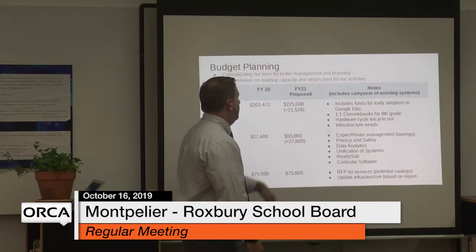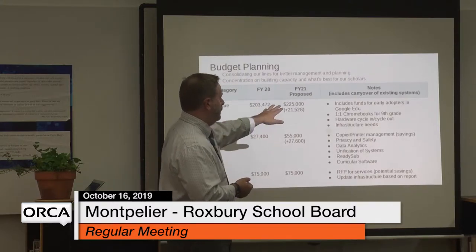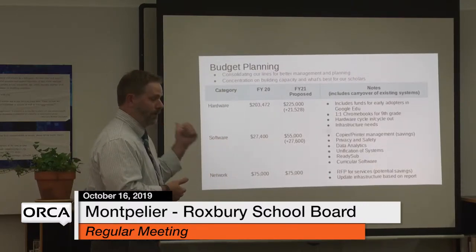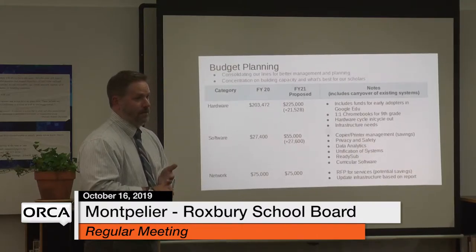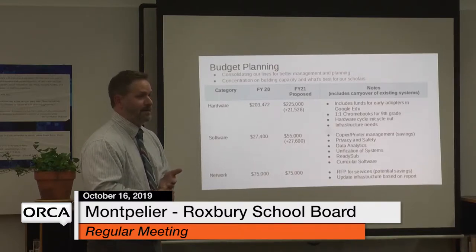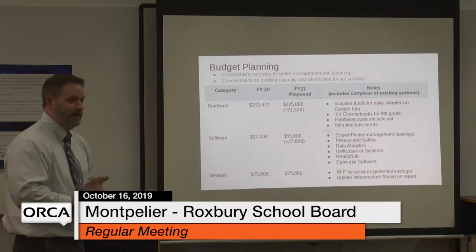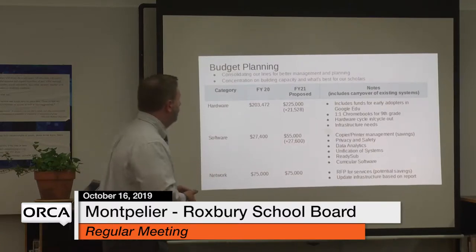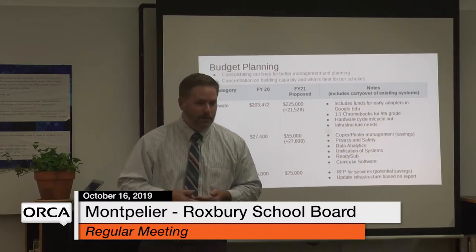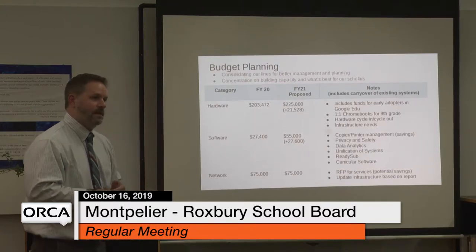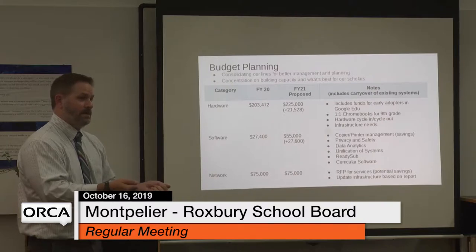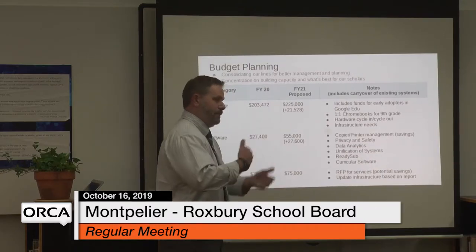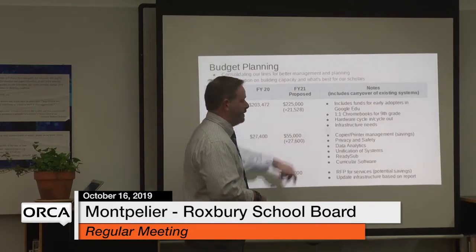For next year, we're hoping to increase hardware by $21,528. This includes funds for early adopters in Google EDU — moving staff to Chromebooks. We have a lot of Windows devices where folks are just checking email and accessing Google Drive; we don't need to pay for licenses and hardware that dies in a year. We're also planning one-to-one Chromebooks for ninth grade, following the model Barre City recently implemented, where each student receives a device for their four years. This also covers our regular hardware cycle and infrastructure needs.